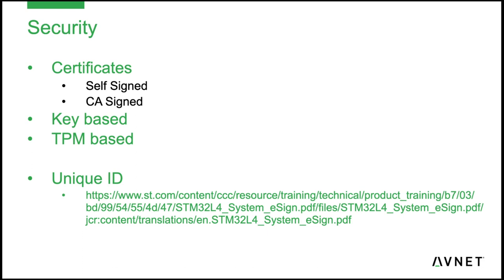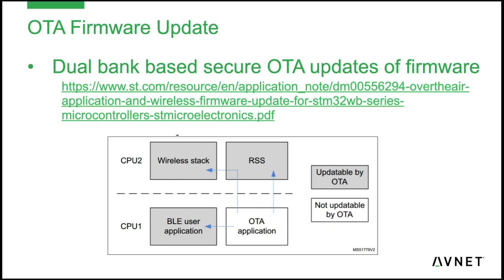In certain cases we use key-based authentication, but certificates are preferred. In other cases we use a TPM-based solution — a Trusted Platform Module — connected to the micro, and with proper endorsement keys we ensure it is securely connected to the cloud platform. Each device also needs a unique ID. The STM32 has a unique device ID programmed within the chip itself at the factory, which we can use as that unique ID.